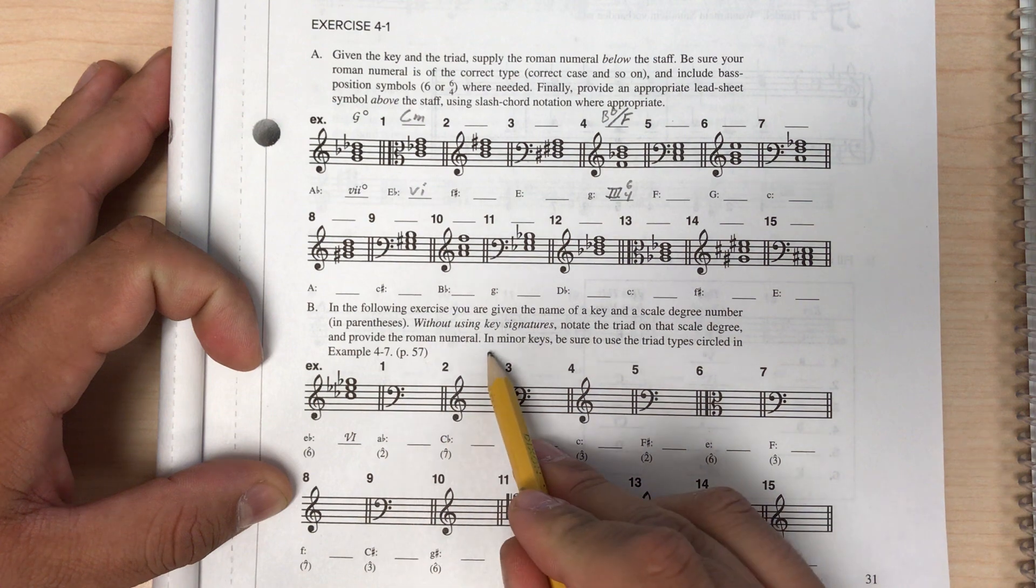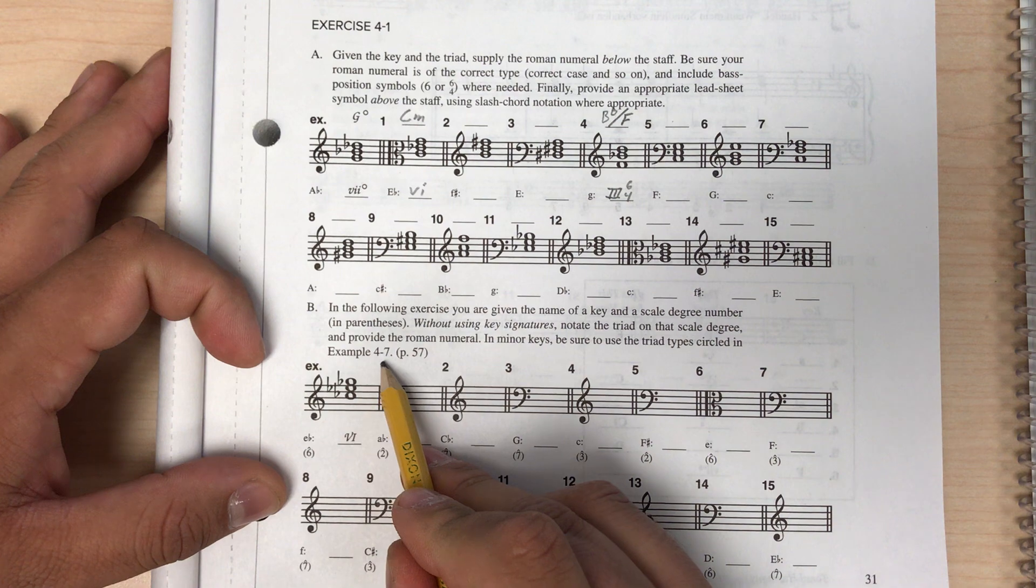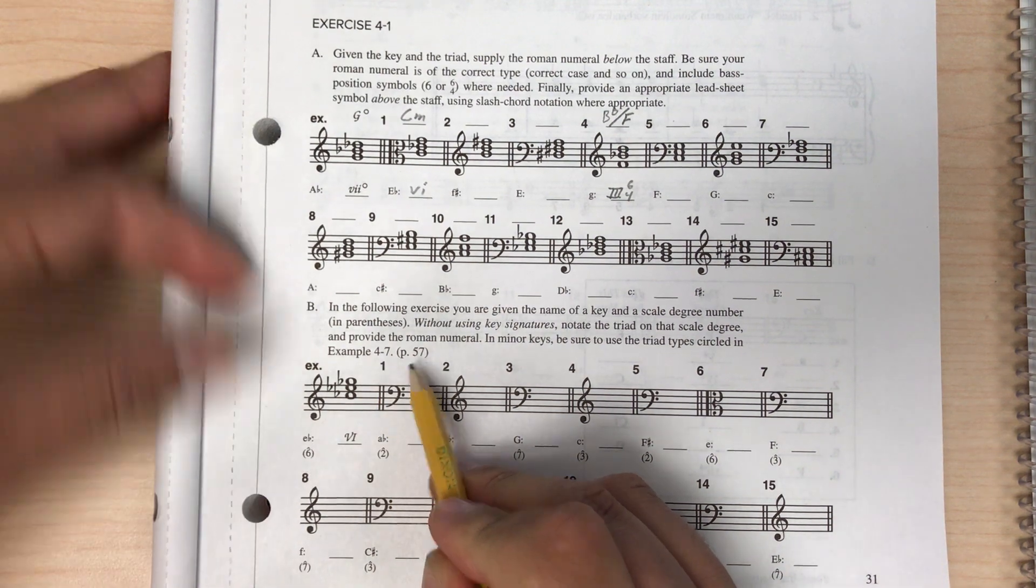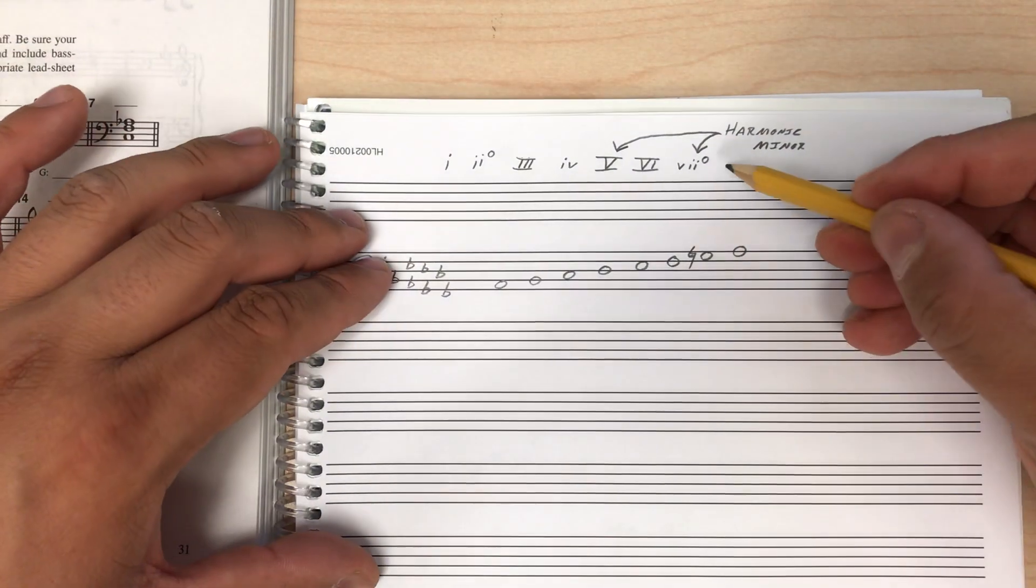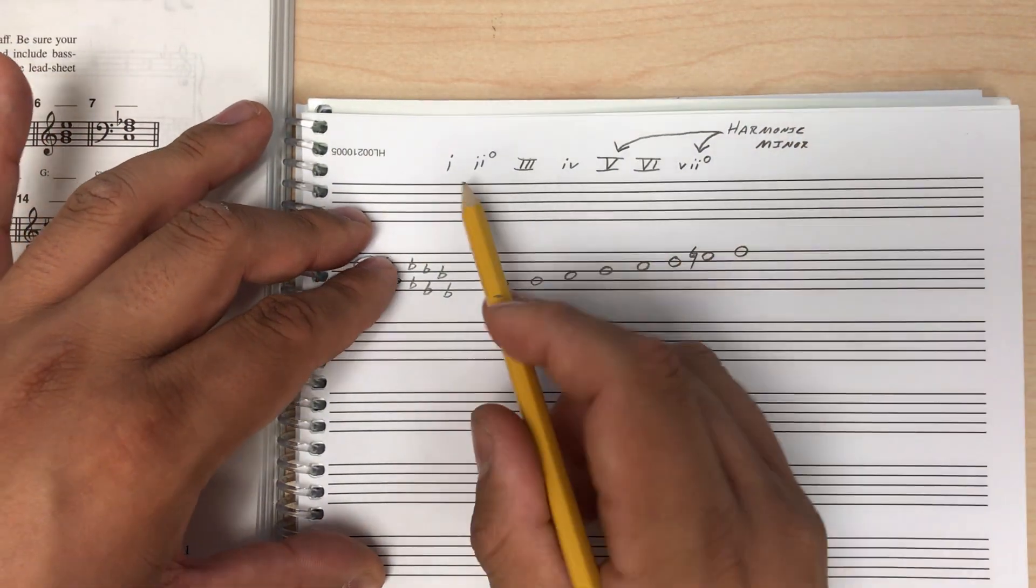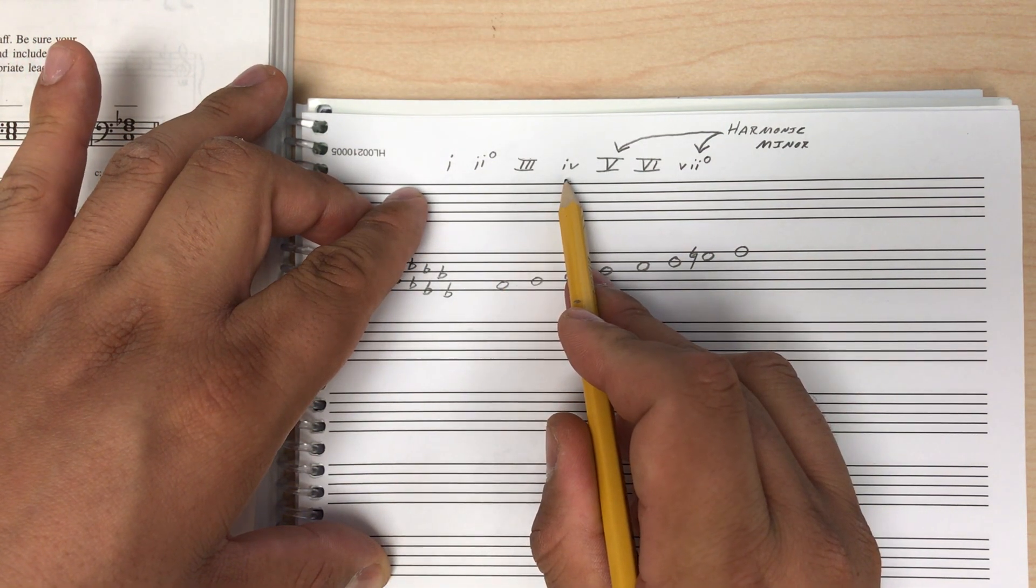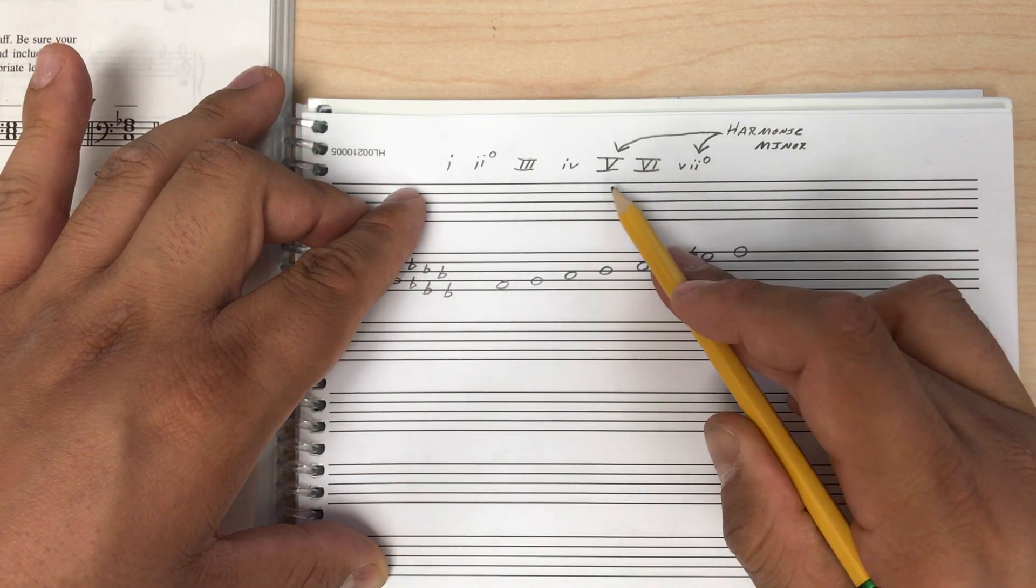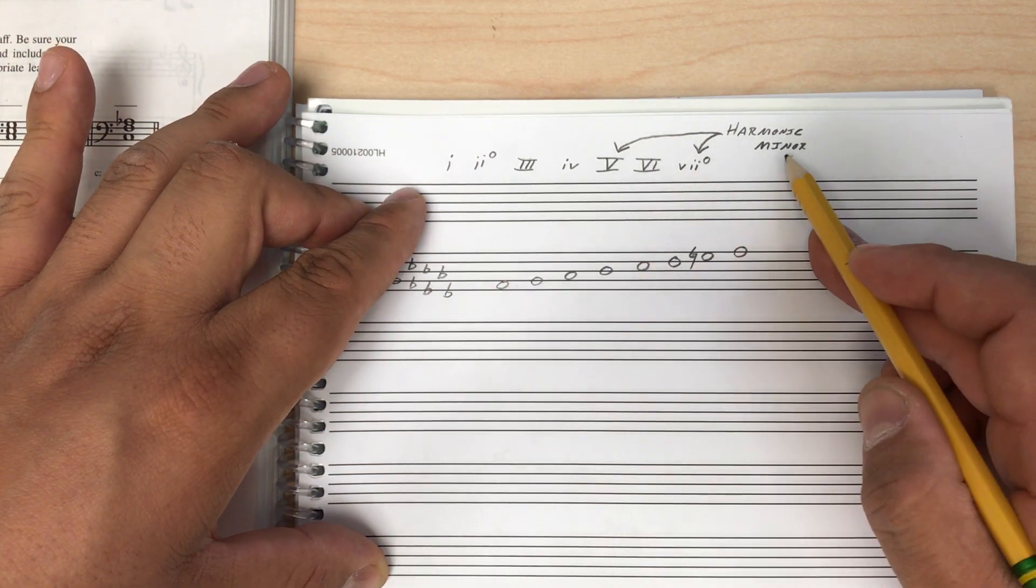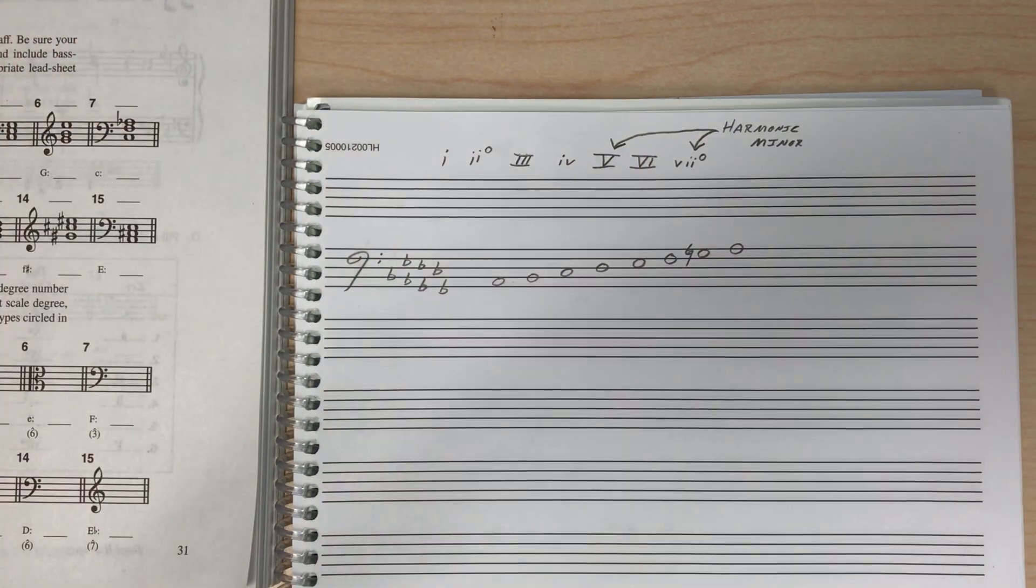And in minor keys it says, in minor keys be sure to use the triad types circled in example 4-7 on page 57. So those are the most common minor key chords that we went over in class where most of the chords in a minor key will use the natural minor scale, but the V and the VII, the leading tone chord and the dominant chord, will use harmonic minor. They'll use that raised seventh scale degree. So that's something to keep in mind.